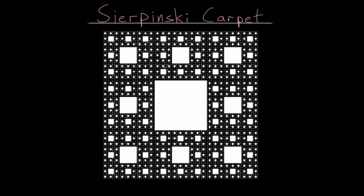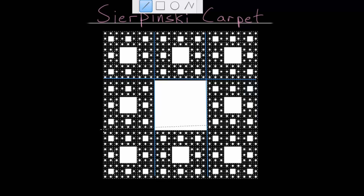Remember that this fractal is created when we start with a square and split it into nine smaller squares, and then the middle one — colored in white — is removed. Then for each of the remaining eight squares, we do the same process: we split each into nine smaller squares and then remove the middle one.